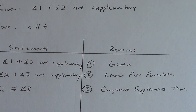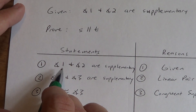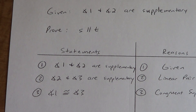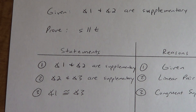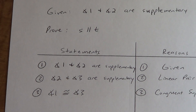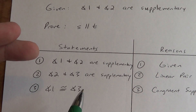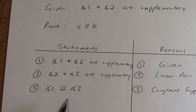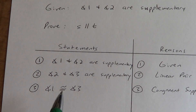We could have done this proof without using the congruent supplements theorem — I'll tell you how, but it takes a lot longer. We would have used the definition of supplementary to say angle 1 plus angle 2 equals 180 degrees, then used the linear pair postulate again, then set angle 2 plus angle 3 equal to 180, applied the transitive property to skip the 180, subtracted angle 2 from both sides, and finally used the definition of congruence to switch back. That would have been seven steps; using the congruent supplements theorem, we only need three.